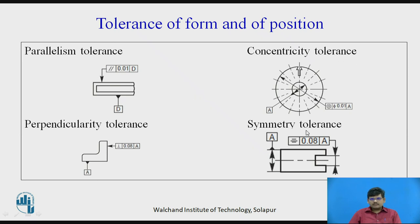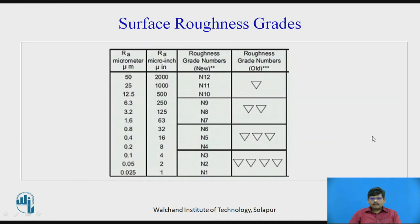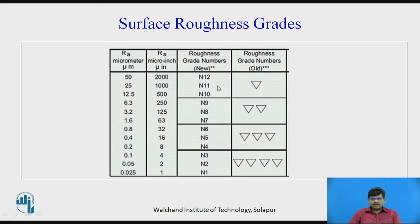Concentricity tolerance and symmetry tolerance are also shown. Coming to roughness grids: roughness is the texture on any object. These triangles show to what extent the surface is smooth — one triangle represents a hard, rough surface, and as the number of triangles increases, the smoothness of the surface increases. You can use either the triangle symbols or values N1 to N12, with roughness values for each zone given in micrometers.